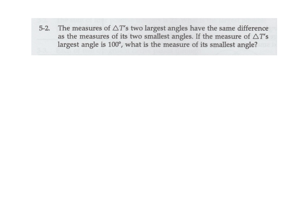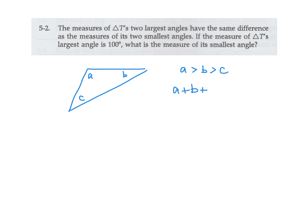The measures of triangle T's two largest angles have the same difference as the measure of its two smallest angles. If the measure of triangle T's largest angle is 100, what is the measure of its smallest angle? So we have some triangle. Let's draw a triangle and say we have A, B, and C as the angles, with A bigger than B and B bigger than C. For any triangle, we know that the sum of the angles is 180.